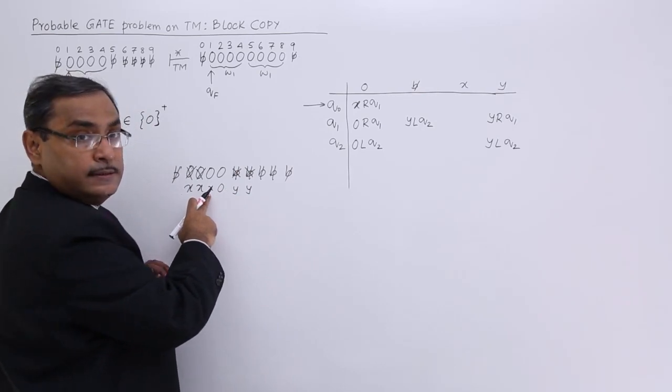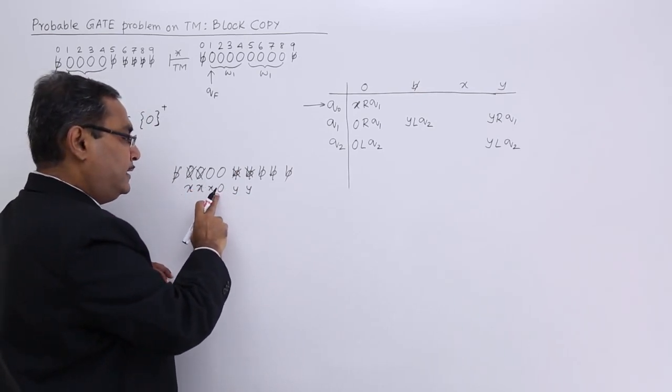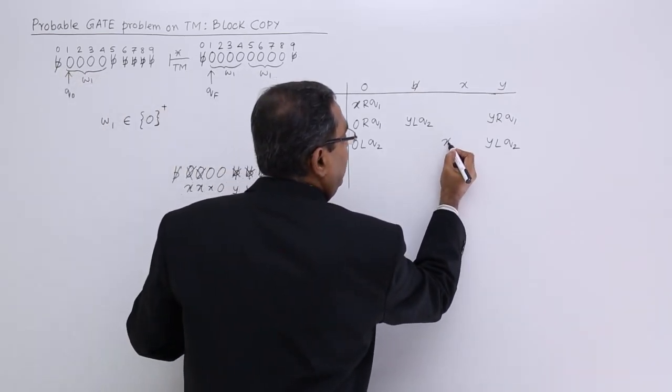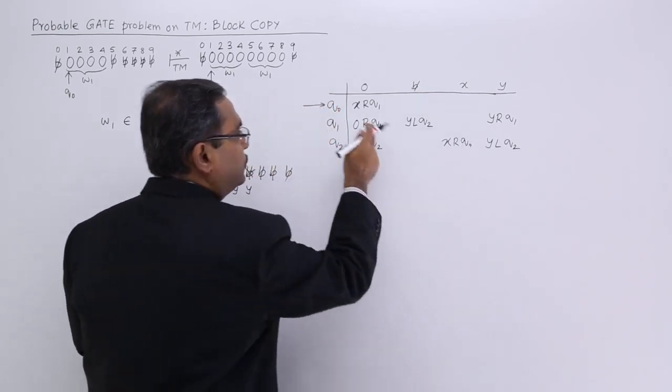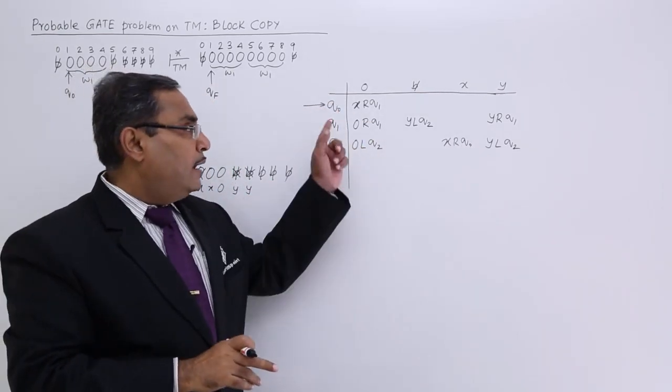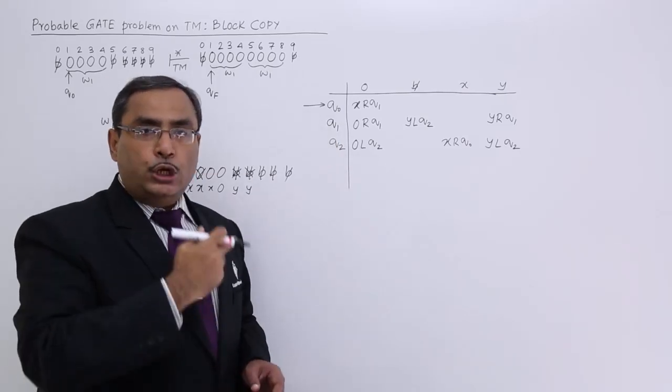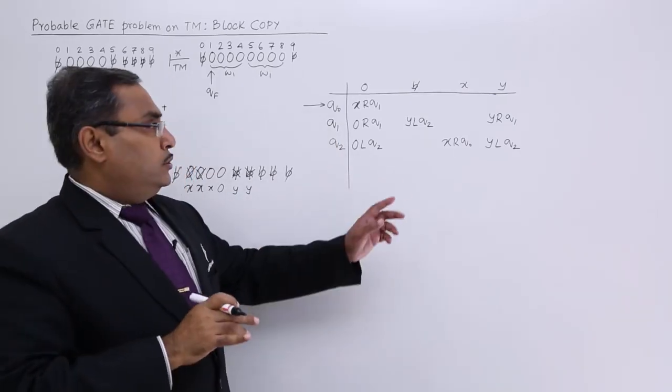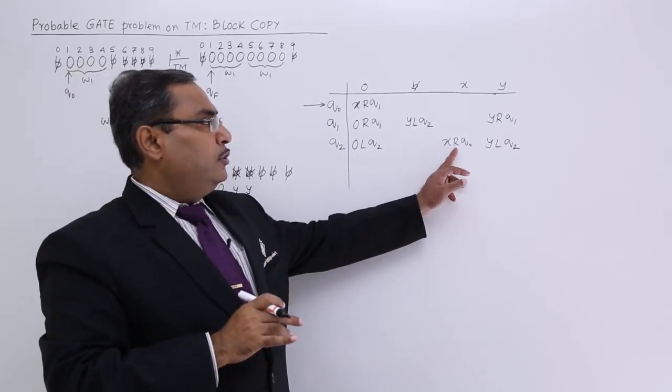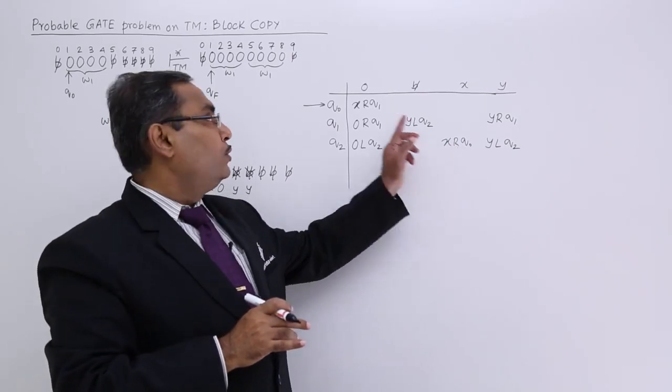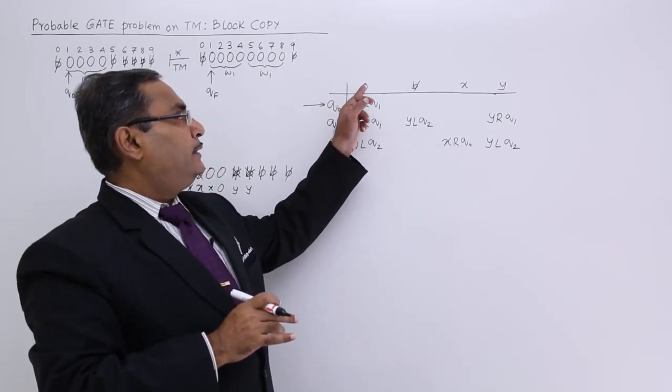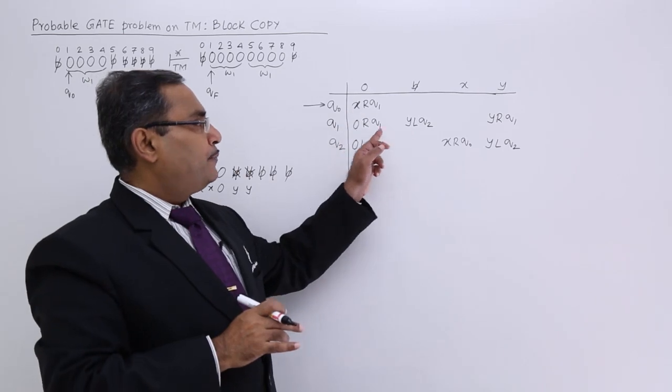But if I get an x, if it gets x, then you should write x towards the right and it will continue the process again. So, in this way, I am incorporating the looping. If it gets x, then it will go to right, then it will go to q0. So, q0 will make the next 0 as x and the process will be repeated.